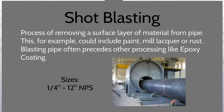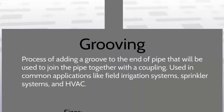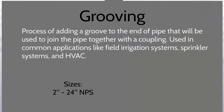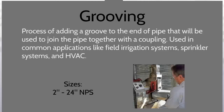Blasting pipe often precedes other processes like epoxy coating. Grooving is the process of adding a groove to the end of pipe that will be used to join the pipe together with a coupling. Used in common applications like field irrigation systems, sprinkler systems, and heating, ventilation, and air conditioning.